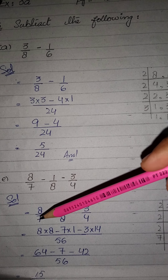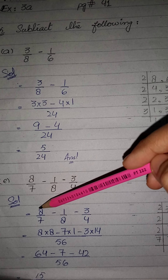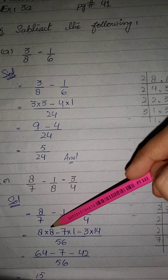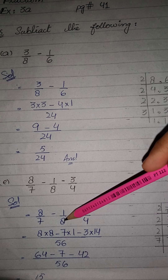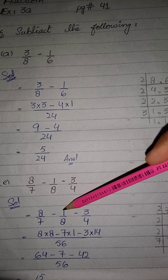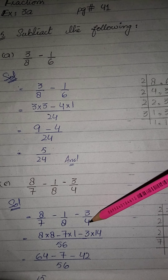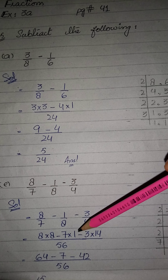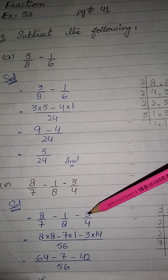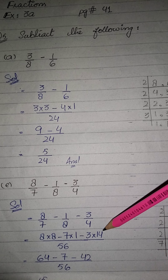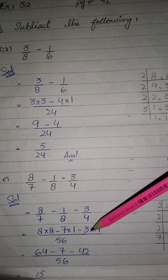اب ہم دیکھیں گے: 7 کو کتنی times پڑھا کہ 56 آیا — 7، 8 سے 56، تو اس 8 کو 8 سے multiply کروا دیں گے۔ پھر بیچ میں minus۔ 8 کو کتنی times پڑھا کہ 56 آیا — 8، 7 سے 56، تو اس 1 کو 7 سے multiply کروا دیں گے۔ پھر minus۔ 4 کو 14 times پڑھا تو 56 آیا، تو اس 3 کو 14 سے multiply کروا دیں گے۔ تو 8 eights are 64، 7 ones are 7، اور 3 fourteens are 42۔